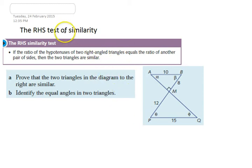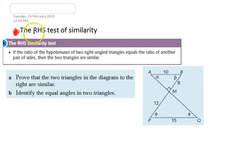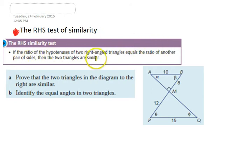This is our final video. We're looking at the RHS test of similarity. We've gone through three tests of similarity so far — this is our fourth one, the RHS test. If the ratio of the hypotenuses of two right-angled triangles equals the ratio of another pair of sides, then the two triangles are similar.